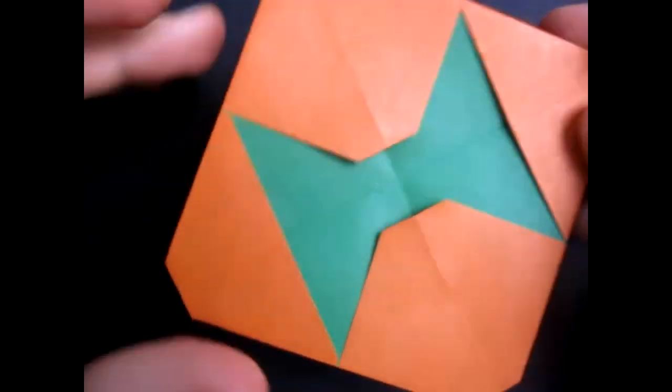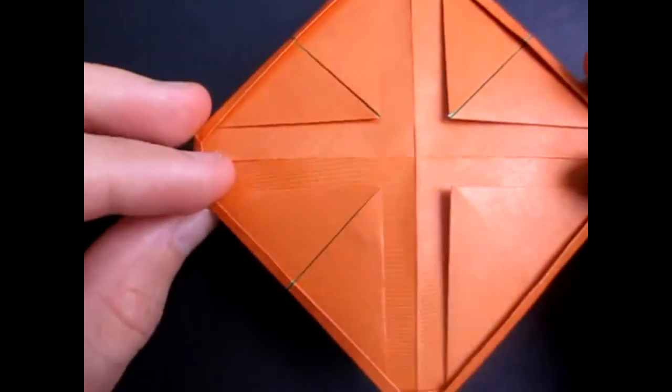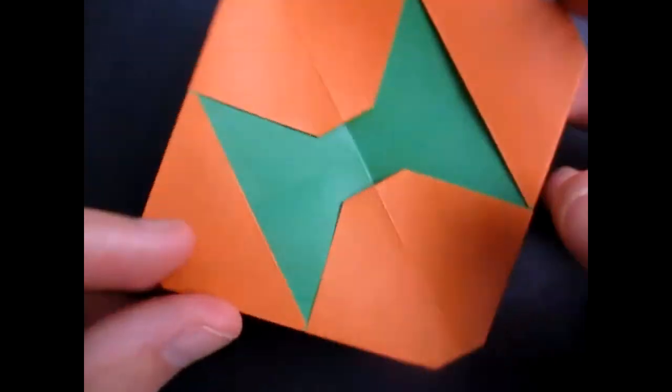Alright. And now turn it over and just crease everything nice and sharp. And here we have the bowtie flicker. See, it has a nice bowtie centered in here. And yep, here's the back side. Alright. Now let's see how it flies.